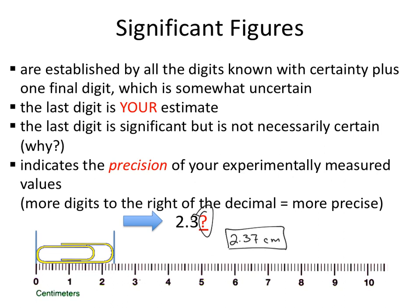Everybody does the best they can, and as long as your estimations are close, it works out well. Whenever you're using a piece of equipment: look at the markings, determine what the large and small markings represent, express those marks relative to your measurement, and always include an additional estimated digit. Now, some people ask: what if the measurement was right on the 0.3 mark? In that case, you still need to indicate that digit — you show that the estimated digit is 0, and you write 2.30 centimeters as your measurement.